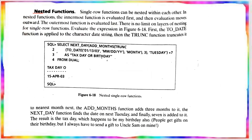The next topic is nested functions. As the name indicates, single row functions can be nested within each other. In a nested function, the innermost function is evaluated first, and the evaluation moves outward — the outermost function is evaluated last. There is no limit on the layers of nesting for single row functions.